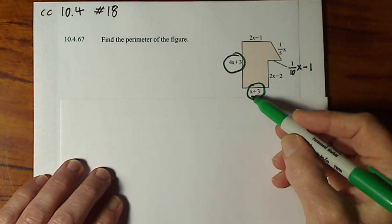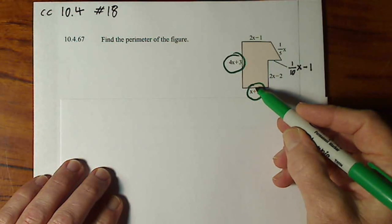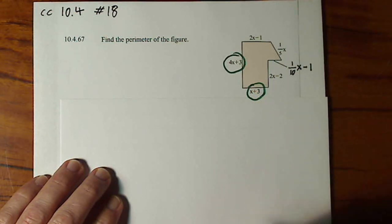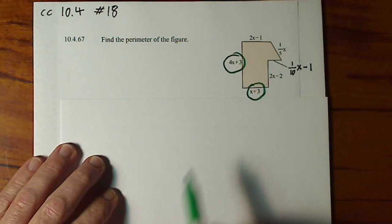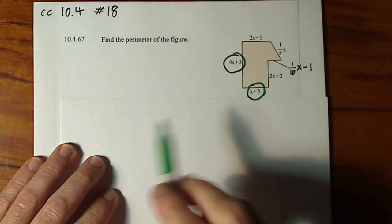Remember like terms have the same variable and exponent. The exponent is 1. It's not required to be written when it's a 1. So first we'll combine these two lengths.